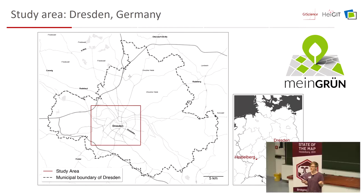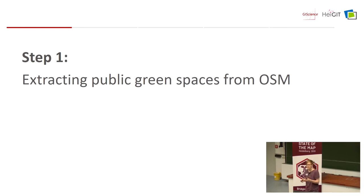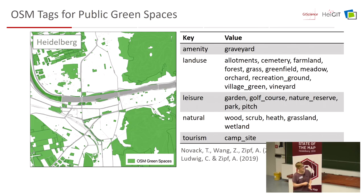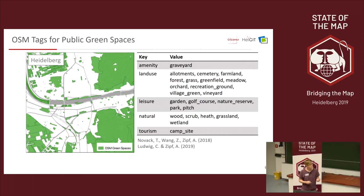The first step when assessing anything is extracting the data, and that's where the problems already start. Studies about checking the completeness of highways or buildings are fairly easy — you just extract features with a building key or highway key. But for green spaces, there's not just one key; there are several relevant keys. For Heidelberg, in a previous study, we manually compiled a list of relevant OSM tags, which gives a good representation of green spaces there. For example, 'landuse=cemetery' is a good fit in Germany because cemeteries are always vegetated, but in Israel, cemeteries are almost never vegetated.